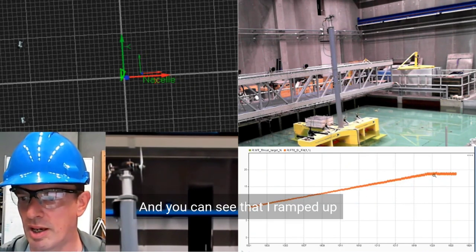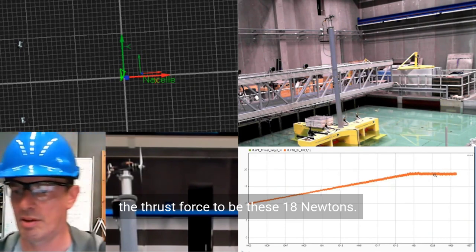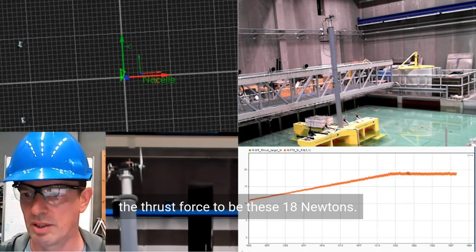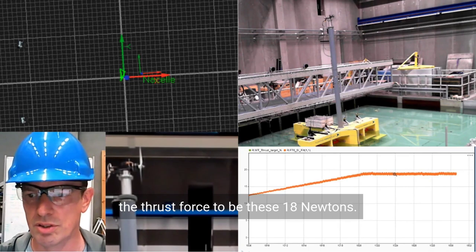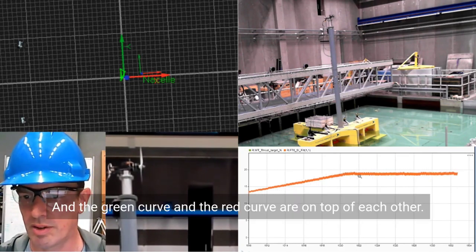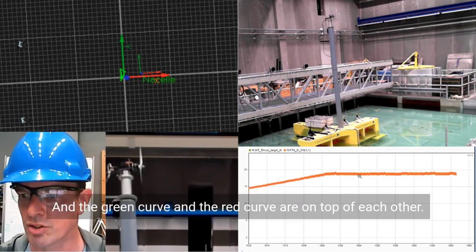The red curve is the measured thrust and the green curve behind it is the target thrust. And you can see that I ramped up the thrust force to be these 18 newtons and the green curve and the red curve are on top of each other.